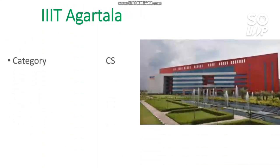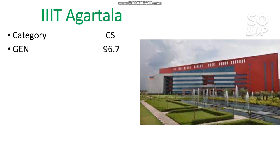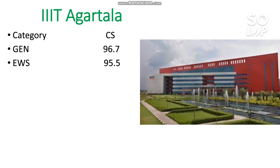The next is IIIT Agartala. The category-wise cutoff for CS is: General 96.7. One more thing - if you want any preparation tips or have any doubts, you can comment below or join my Instagram or WhatsApp group via the links in the description. For EWS it is 95.5 percentile, OBC 95.5, SC 75, and ST 74 percentile.